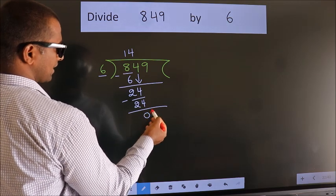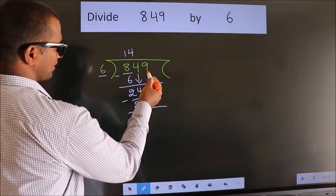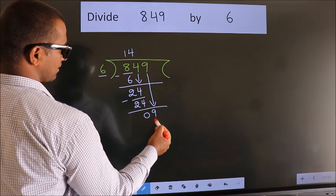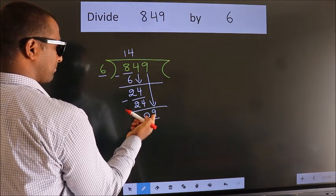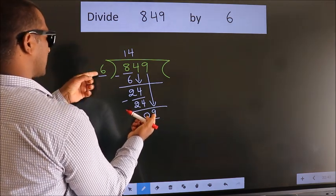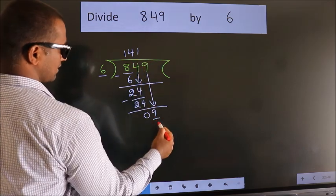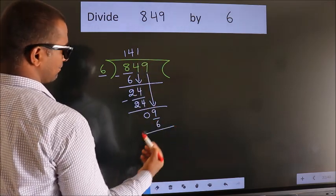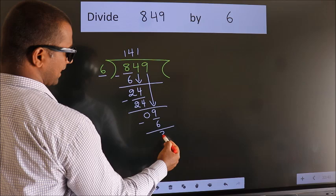After this, bring down the beside number, so 9 down. A number close to 9 in the 6 table is 6 times 1 equals 6. Now we subtract. We get 3.